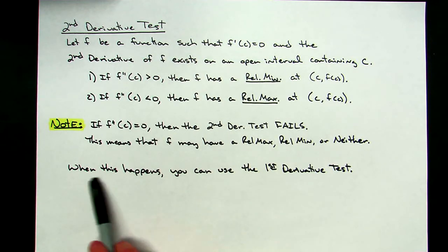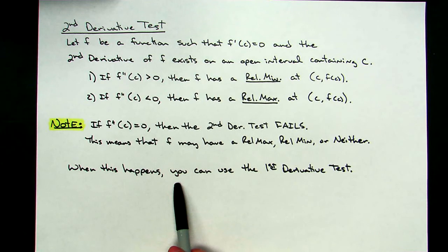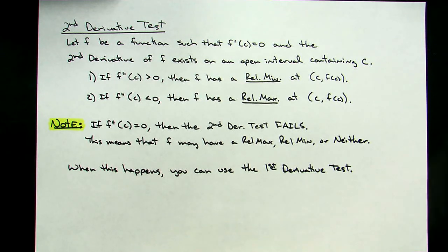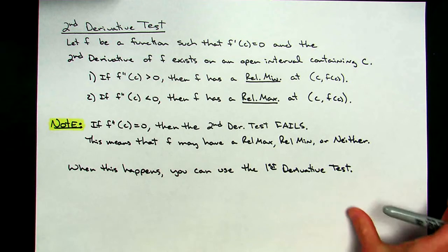When the second derivative test fails, you can go back and use the first derivative test. That usually seems to be about the simplest thing to do since you've already calculated your first derivative.